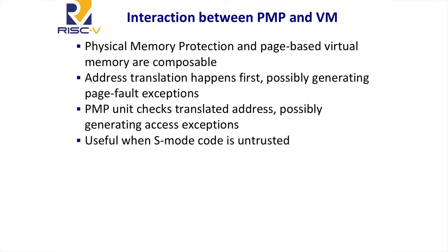I described two memory protection mechanisms — physical memory protection and virtual memory — and they can be composed together. When you access a virtual address, the first thing that happens is address translation from virtual to physical, which may generate a page fault. After translation, the resulting physical address is checked against the physical memory protection unit, which may generate an access violation. So they compose cleanly, which is particularly useful when you don't fully trust supervisor code but don't have full hypervisor support.